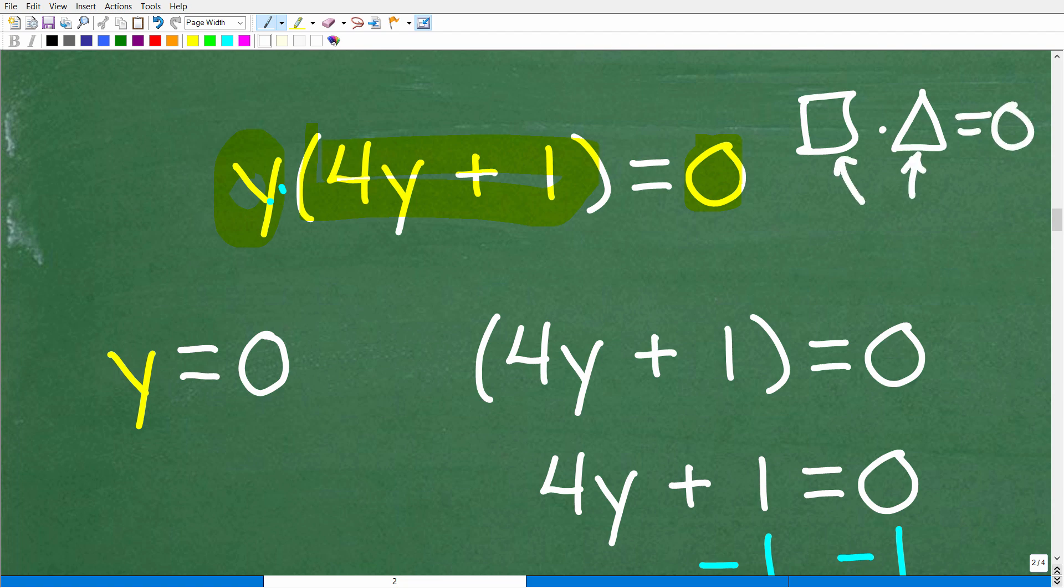So your friend might be saying, well, I don't know. Maybe one of them must be 0 because you can't multiply two things together and get 0 as your answer unless one of the numbers or maybe both of the numbers are 0. All right. So this concept is called the zero product property.